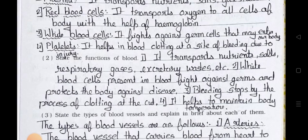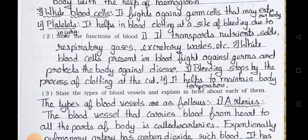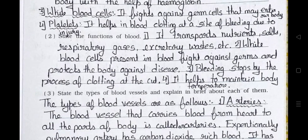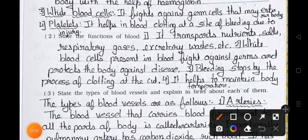Question number 2: State the functions of blood. Answer: Point 1 — It transports nutrition, salts, respiratory gases, excretory waste, etc. Point 2 — White blood cells present in the blood fight against germs and protect the body against disease. Point 3 — Bleeding stops by the process of clotting at the cut.